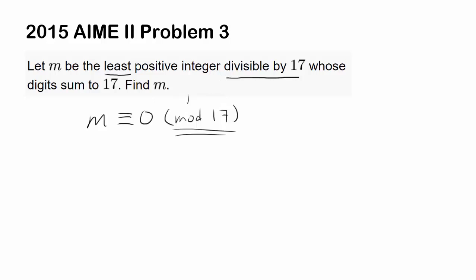And we know their digits sum to 17. So we know written in mod 9, m has to be 17. And the reason is, when you divide m by 9, the remainder you're going to get is 17 or subtracting 9, 8. So when you divide m by 9, the remainder you get is 8.